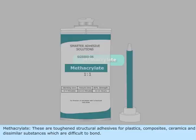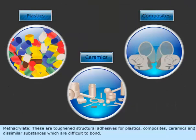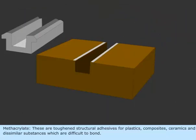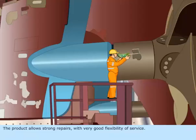Methacrylates: These are toughened structural adhesives for plastics, composites, ceramics, and dissimilar substances which are difficult to bond. The product allows strong repairs with very good flexibility of service.